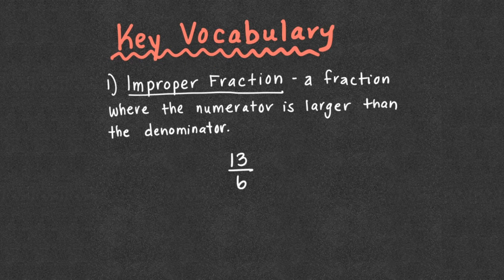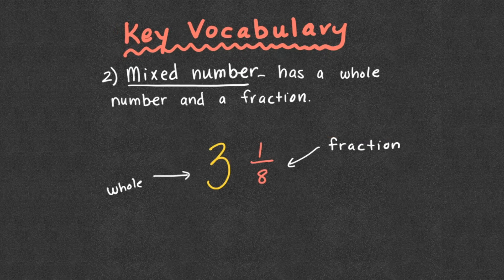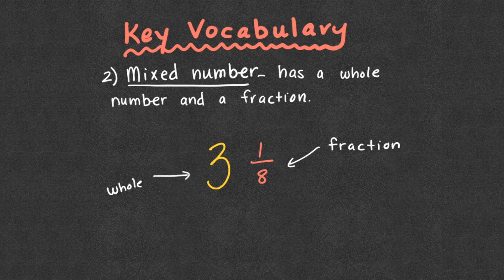Some key vocabulary to discuss. First, we have an improper fraction, which is a fraction where the numerator is larger than the denominator. Remember that all improper fractions are greater than one whole. Second, we have mixed numbers, which have a whole number and a fraction. For example, three and one-eighth, where three is the whole number and one-eighth is the fraction — a mix of a whole and a fraction.